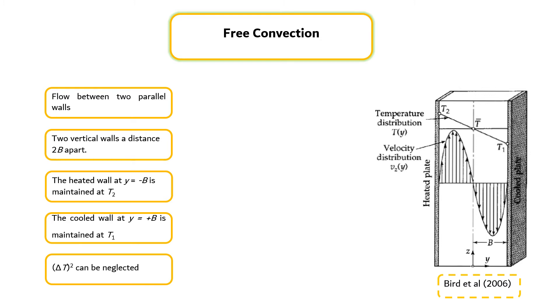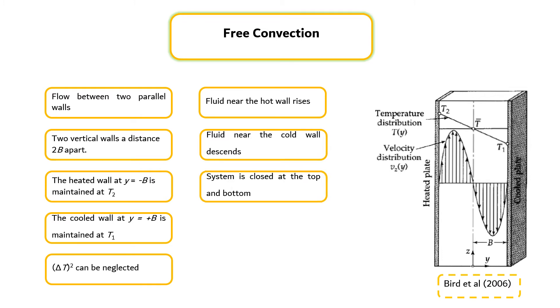Because of the temperature gradient in the system, the fluid near the hot wall rises and that near the cold wall descends. The system is closed at the top and bottom so that the fluid is continuously circulating between the plates.